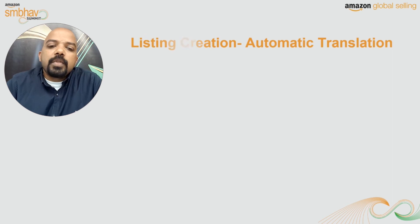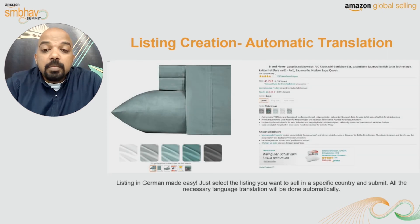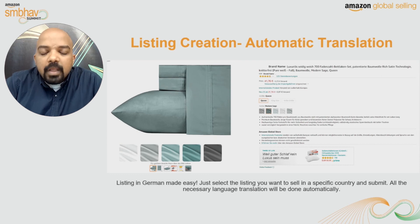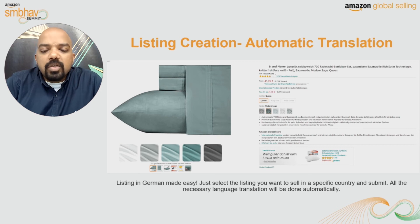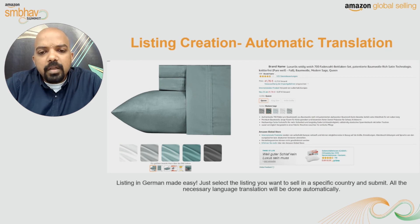Some global marketplaces require listings to be in the local language of that marketplace. Amazon has a robust mechanism of automatic translation. For example, if you want to list your products in Germany, you can use your existing English listing and migrate it onto the German marketplace, and Amazon's automatic translation mechanism will translate all the relevant details into German. This is a facility that almost all of our sellers use when they expand into a multi-marketplace business model.